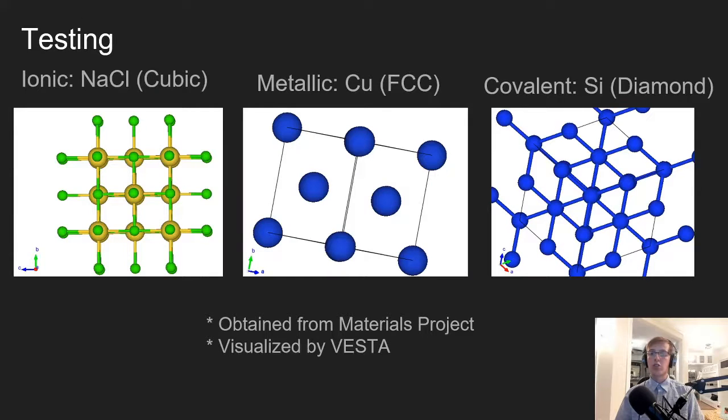The three structures we chose to test were one ionic, one metallic, and one covalent structure, since we wanted to verify that it works for each of the three types of bonding. The first structure is sodium chloride, which is cubic. The second is copper, which is face-centered cubic. And the third structure is silicon, which is diamond-shaped. We obtained all of these atomic positions from Materials Project and visualized them with VESTA.